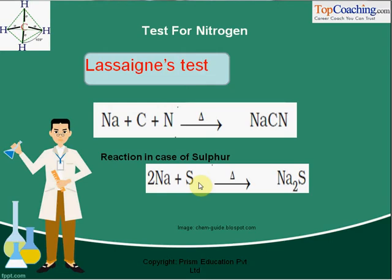Now, what is this sodium fusion extract? We take the compound and some sodium in a test tube and put it over a burning flame with slow heat — it is like the welding process you may have seen. On constant slow heating, the tube gets red hot and the sodium metal and the compound to be tested fuse together, and hence it is called sodium fusion. We then literally break this test tube into water and filter out the compound, which is called the sodium fusion extract.